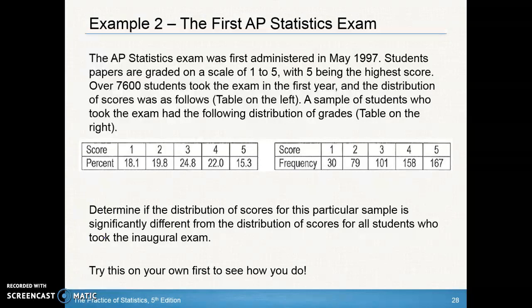The AP Statistics exam was first administered in May of 1997. Students' papers are graded on a scale of one to five, with five being the highest score. Over 7,600 students took the exam in the first year, and the distribution is as follows on the left. So this right here is the distribution in 1997.